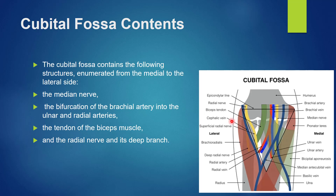The cubital fossa contains the following structures from medial to lateral side. First there is the median nerve, shown here in yellow. Then there is the brachial artery, which bifurcates into the ulnar artery medially and the radial artery laterally.